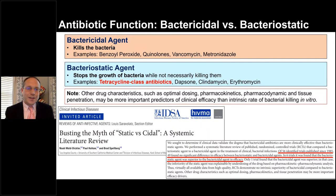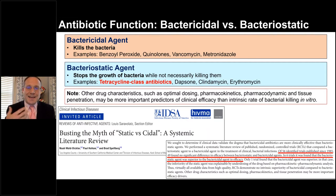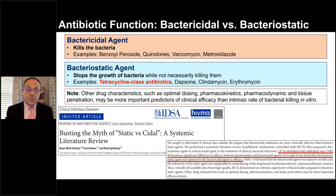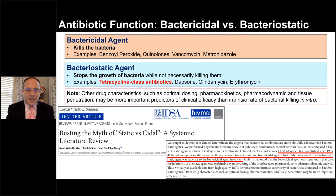There's one myth I want to address right up front: that bactericidal antibiotics must be better than bacteriostatic ones. Bactericidal agents are defined as those that can kill bacteria — examples include benzoyl peroxide, quinolones, vancomycin, and metronidazole. Bacteriostatic agents stop the growth of bacteria but don't necessarily kill them — examples include tetracycline-class antibiotics, dapsone, clindamycin, and erythromycin. However, other drug characteristics such as dosing, pharmacokinetics, pharmacodynamics, and tissue penetration affect clinical efficacy in ways that may differ from in vitro bacterial killing studies.